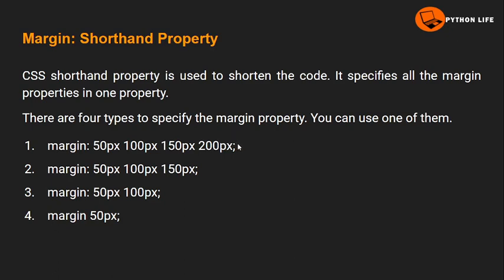You can use four different value types. For example: margin 50px 100px 150px 200px — here we have four values at a time. The first value represents the top margin, the second value 100px represents the right side, 150px represents the bottom margin, and 200px represents the left margin.